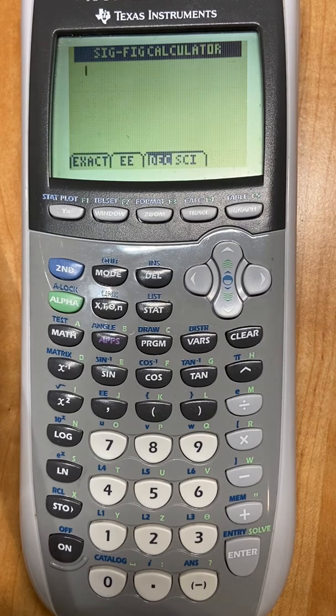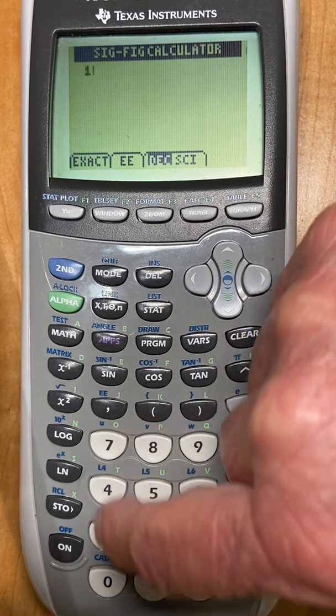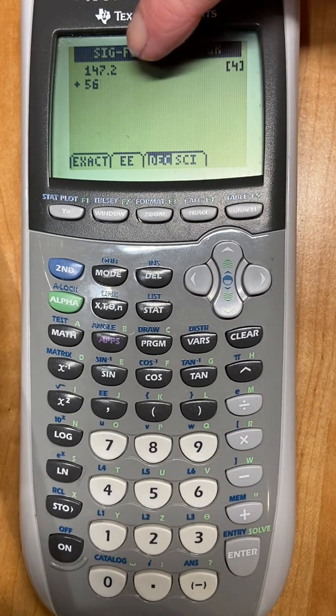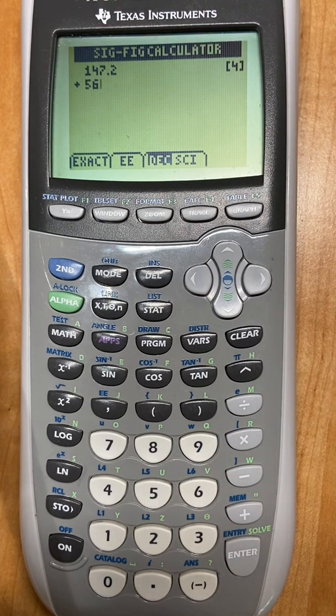Alright, what about adding? So if I have, you know, 147.2 plus 56, one of them goes to the tenths place, one of them goes to the whole number.